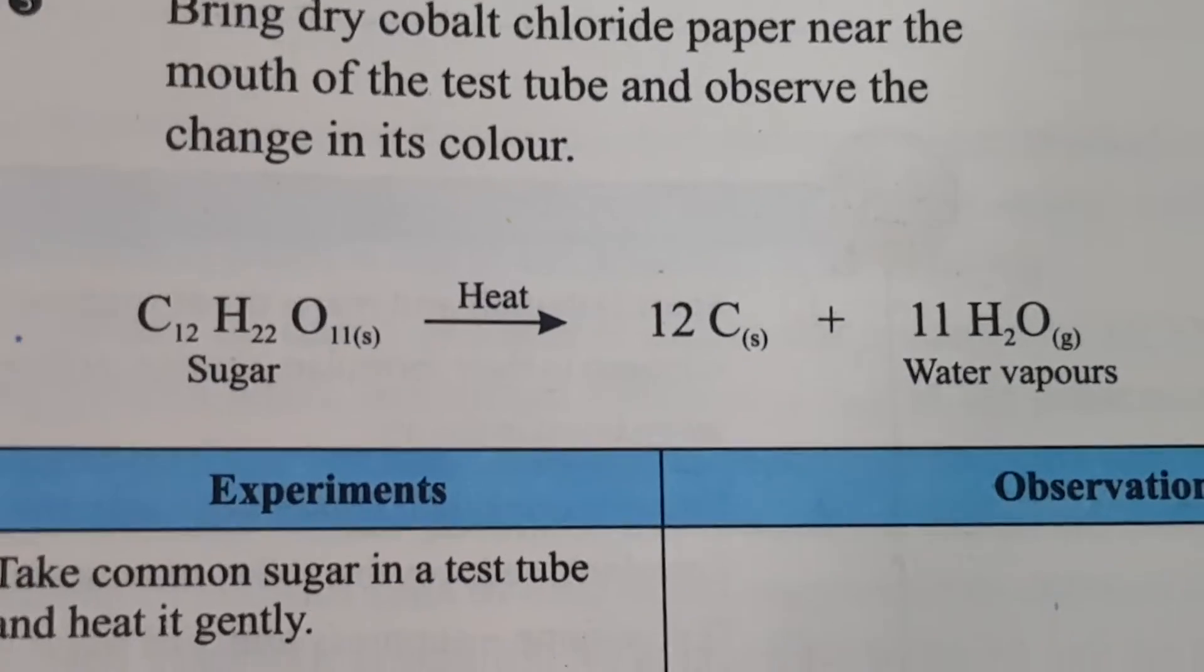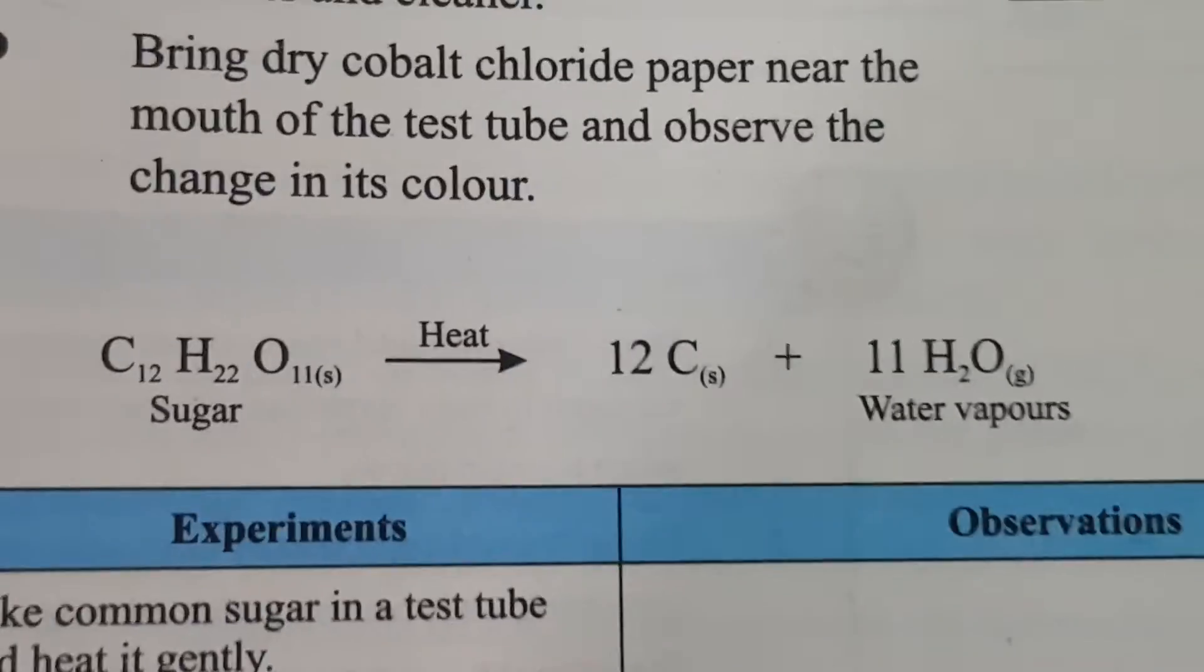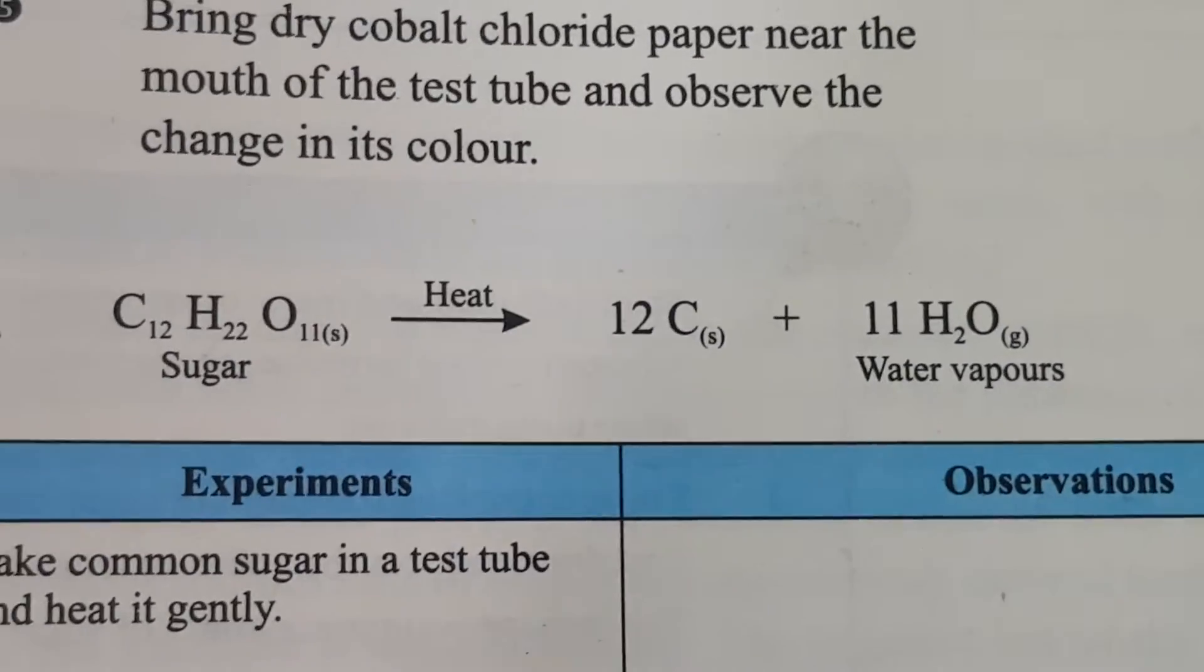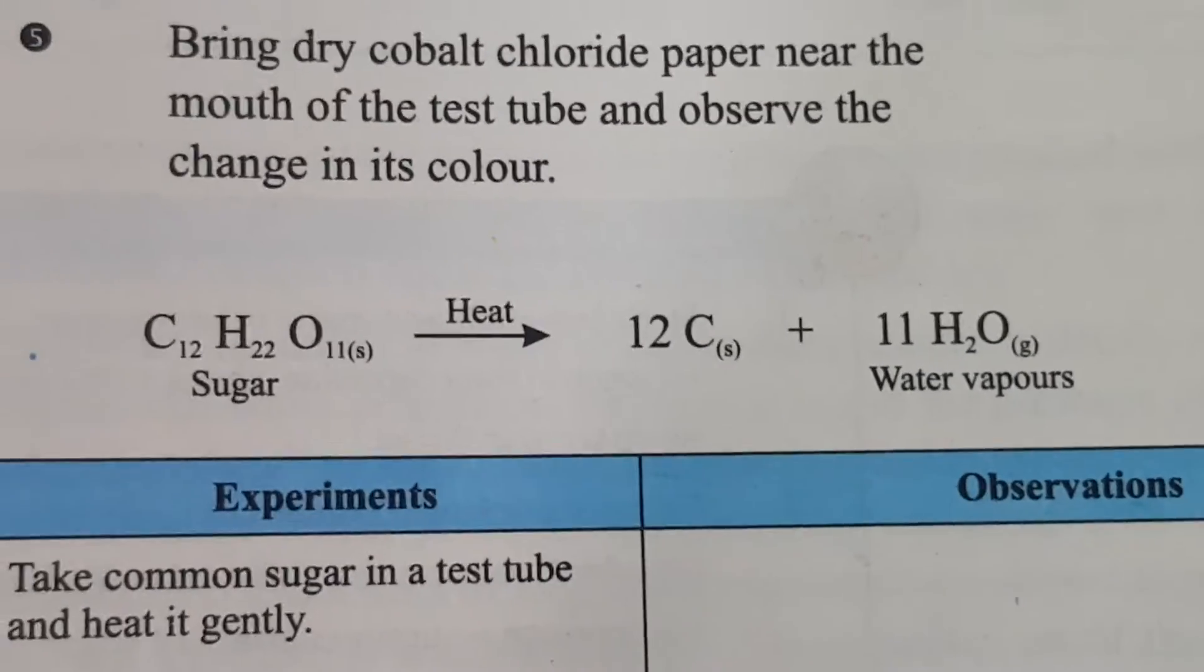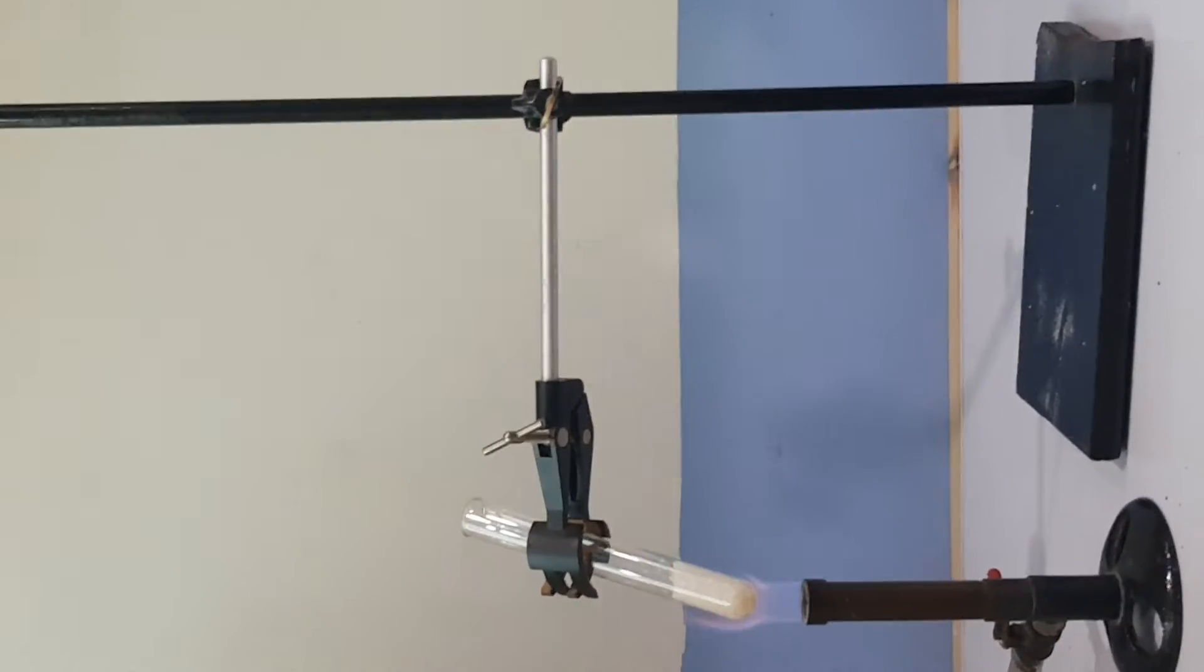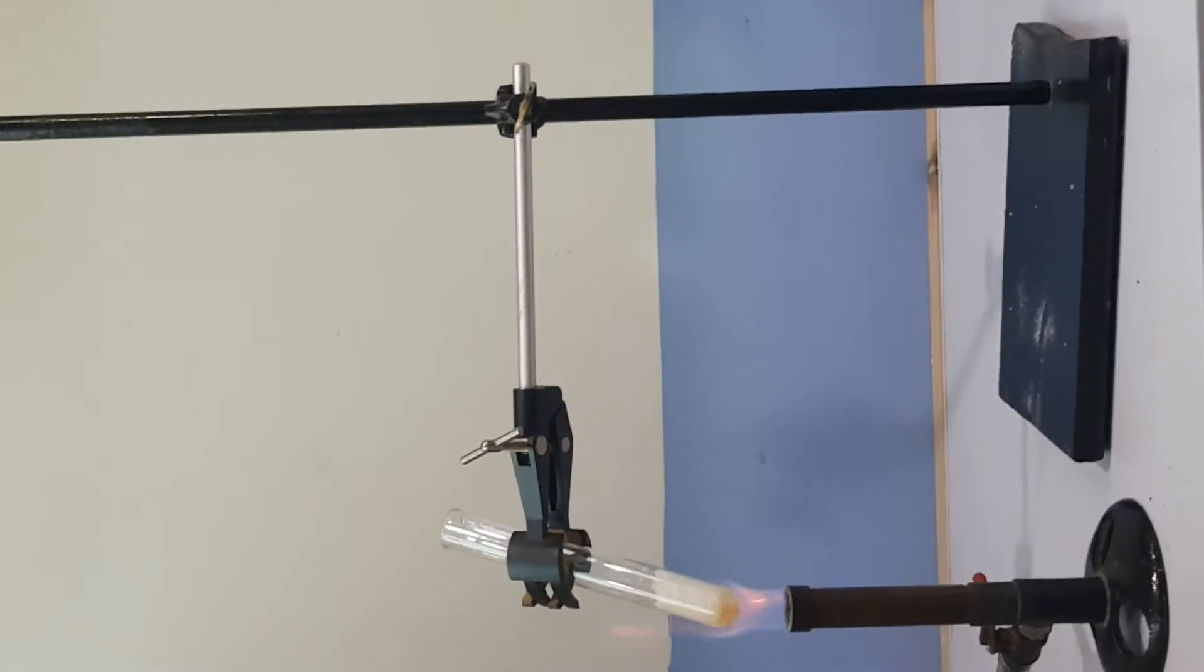To check the presence of water vapor, we will place cobalt chloride paper in front of the test tube. These are cobalt chloride papers. Now we have turned the flame on of the Bunsen burner.